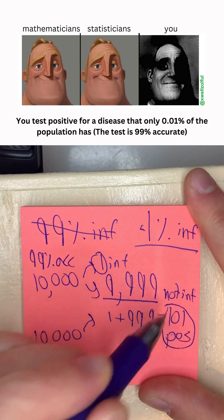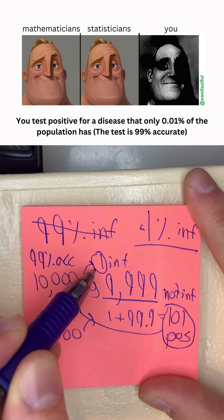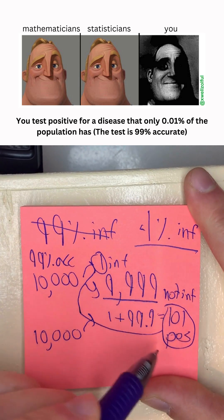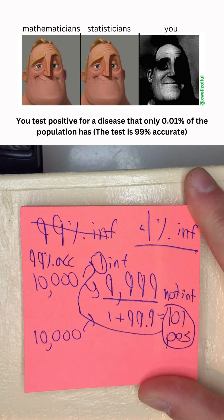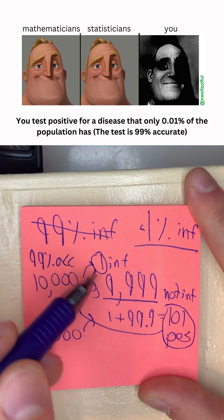101 people testing positive though, when only one person has it in reality? This is you, Mr. Incredible. You're one of these 101 positives. What is the likelihood that you're actually infected?